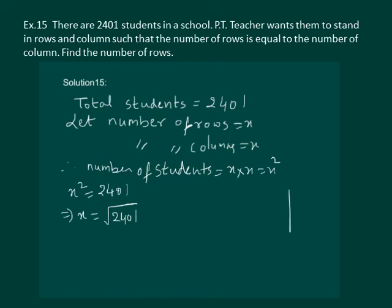Let us find the square root. We place the bars. We get 4 times 4 is 16. On subtraction we get 8.